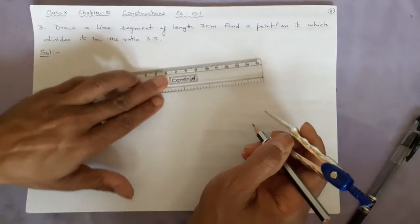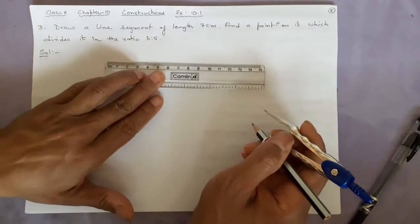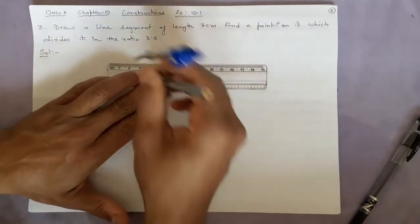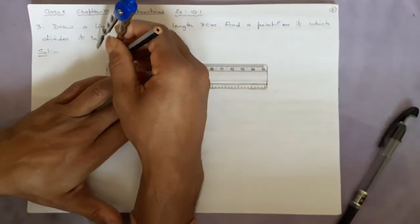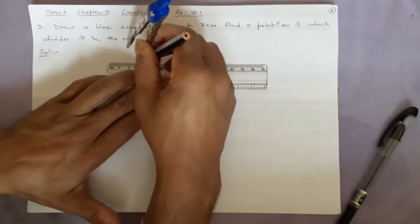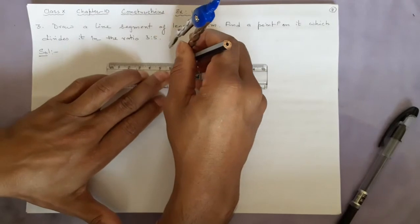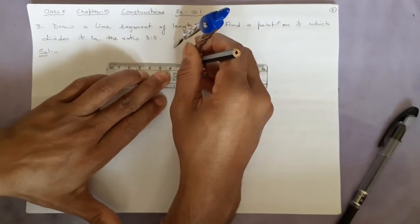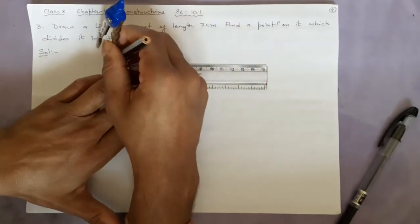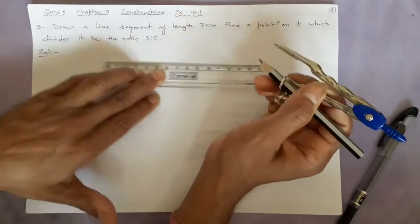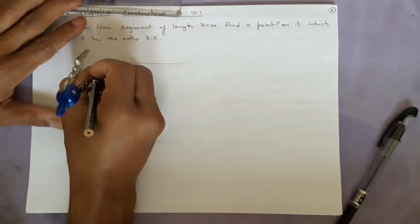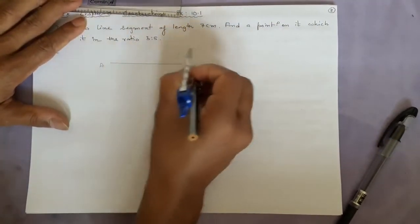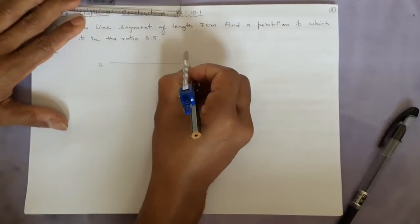First make a line which is 7 cm — from here start and we will stop at 7 cm. Done. Name it AB.